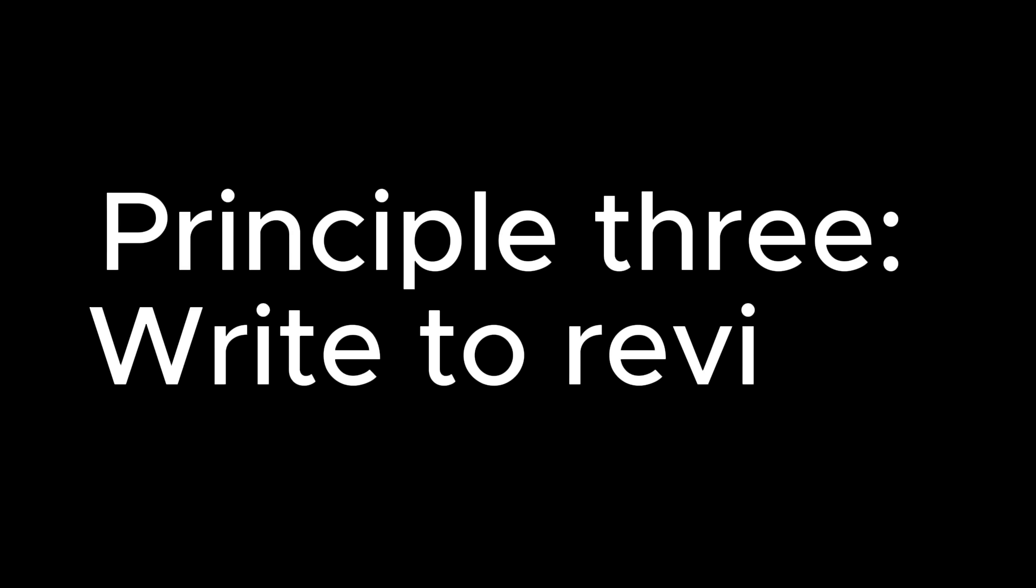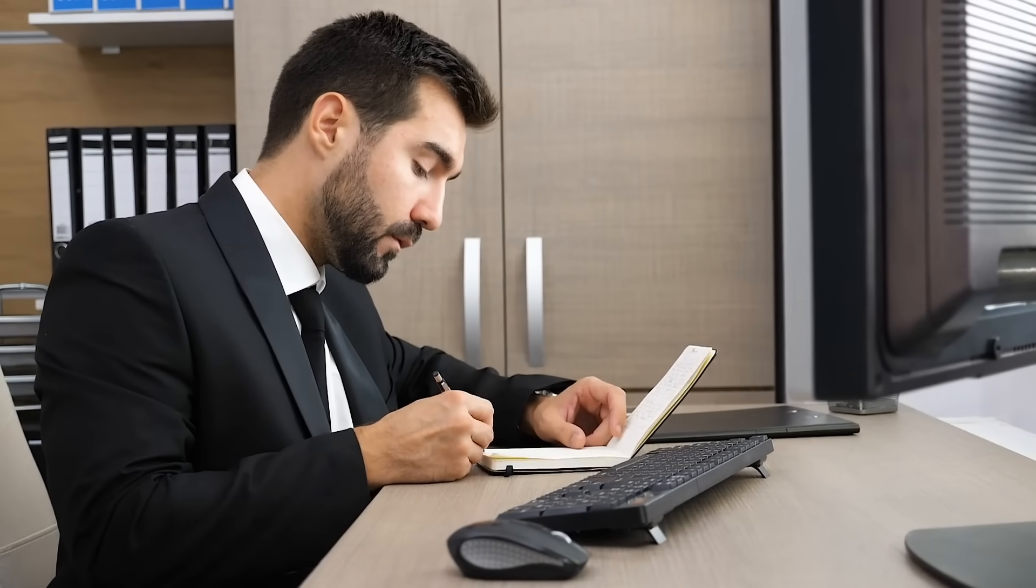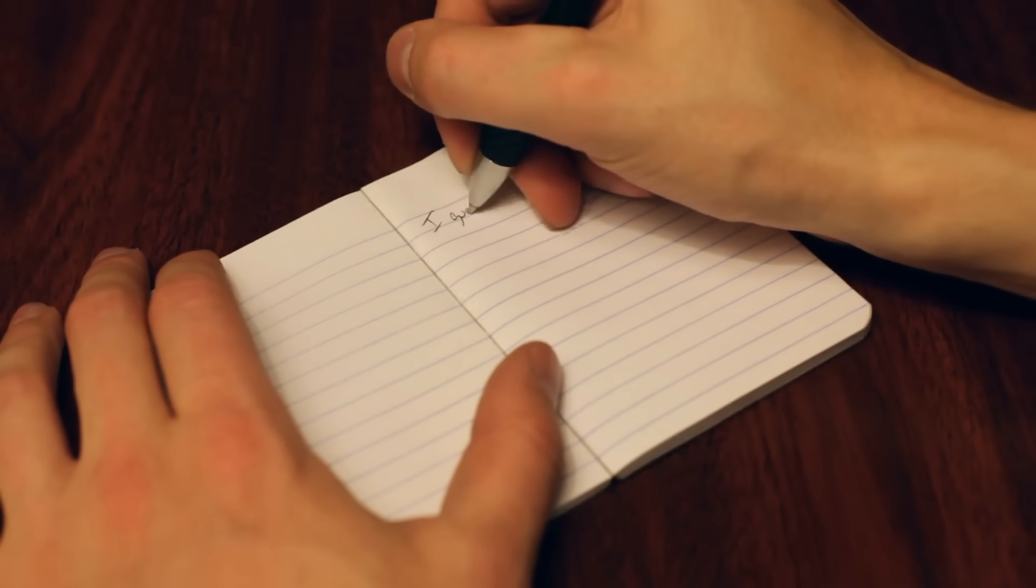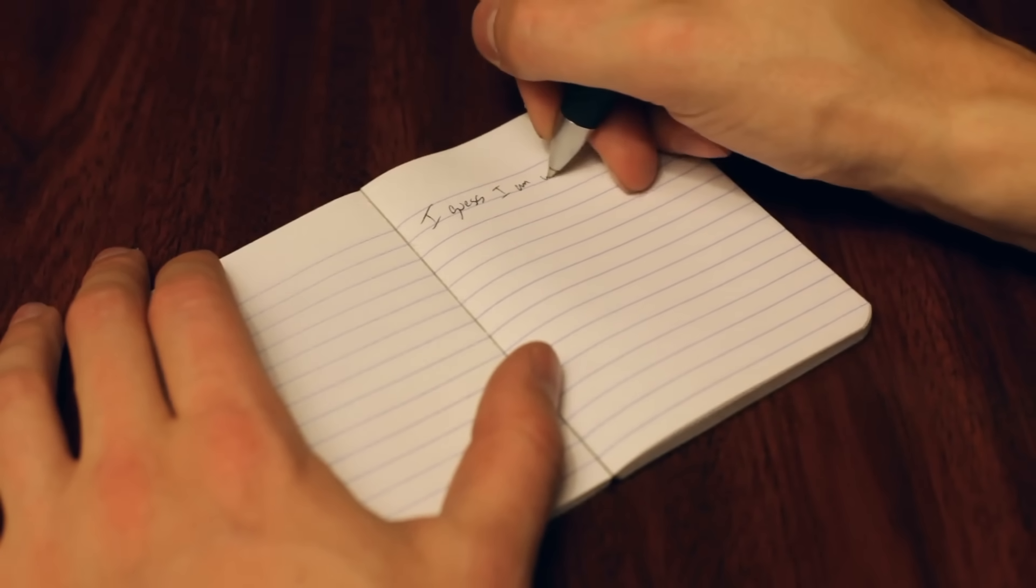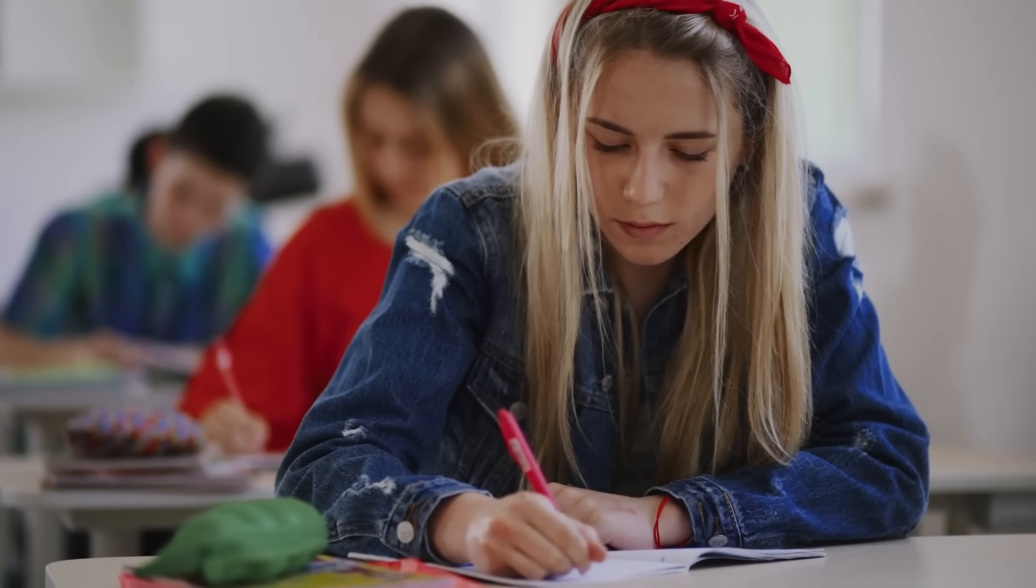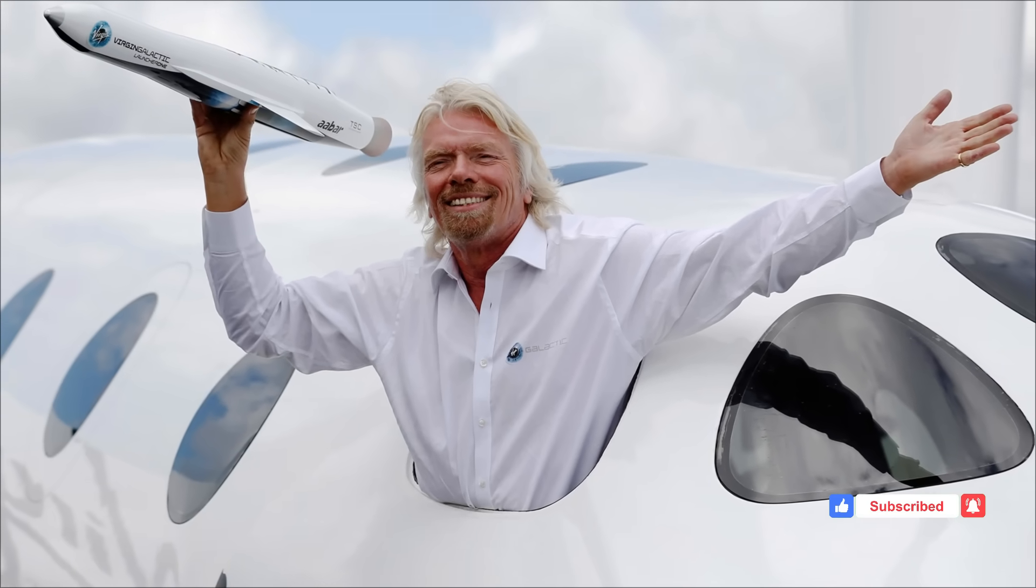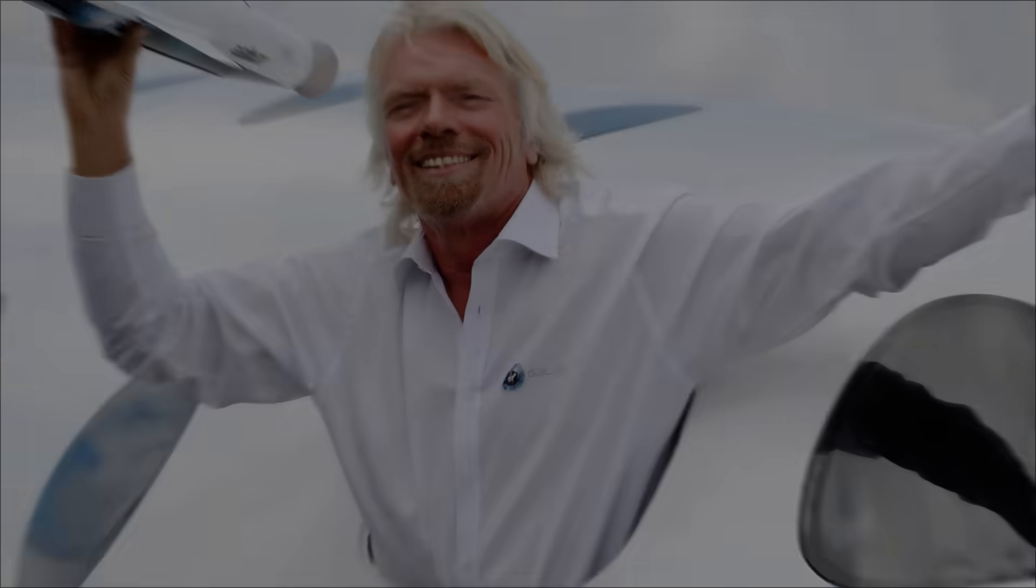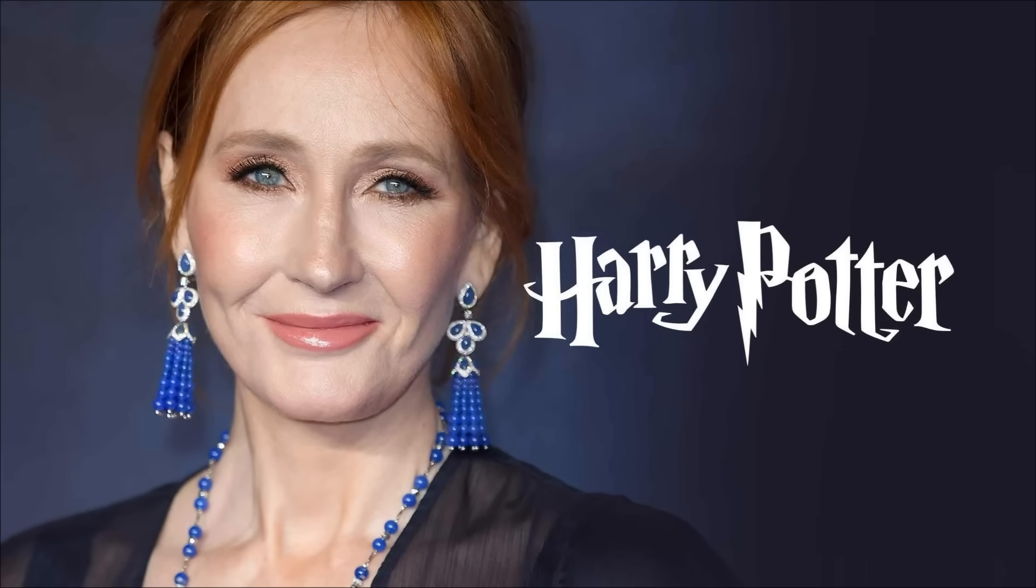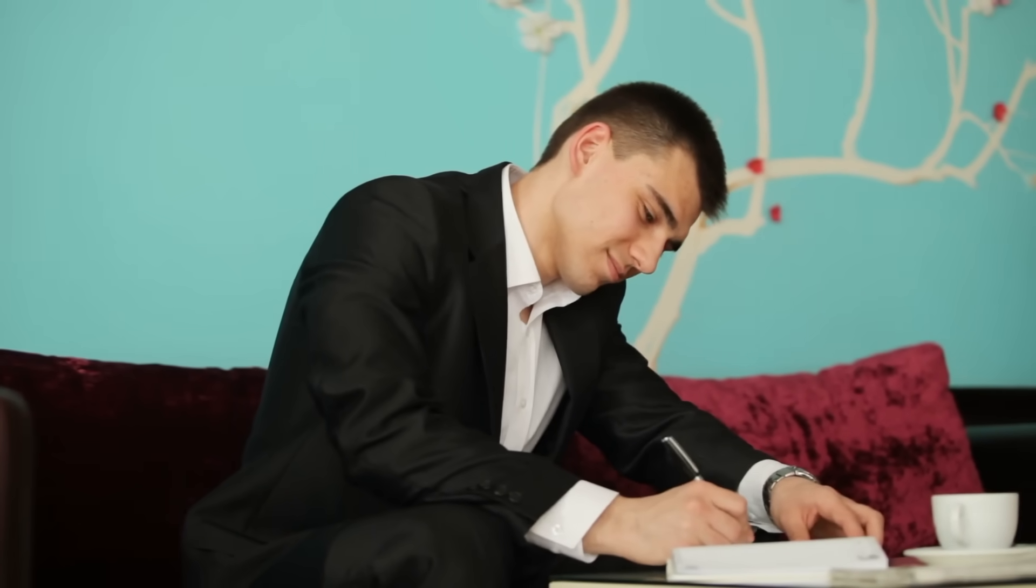Principle three: write to review. Here's what high performers do differently. After a meeting or lecture, they don't just file their notes away. Within 24 hours, they write a brief summary from memory without looking at the original notes first. This retrieval practice is what neuroscience calls the testing effect. You're not just reviewing information, you're strengthening the exact neural pathways you'll need when it matters. Richard Branson credits his handwritten notebooks for building Virgin. Bill Gates takes handwritten notes during his famous Think Weeks. J.K. Rowling plotted all seven Harry Potter books by hand. These aren't nostalgic habits, they're cognitive advantages.